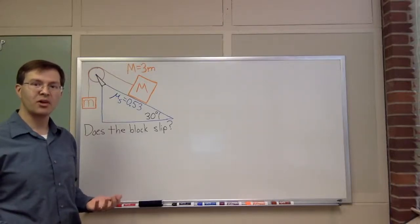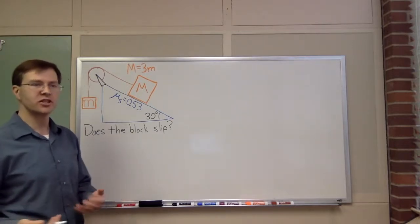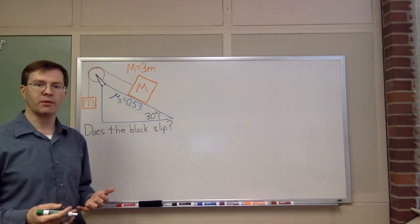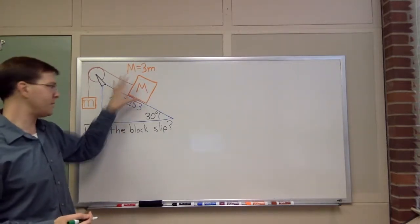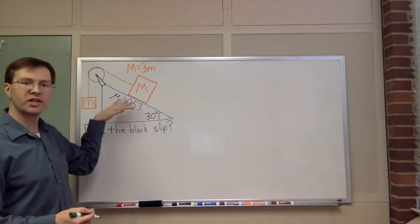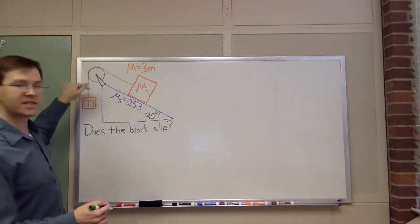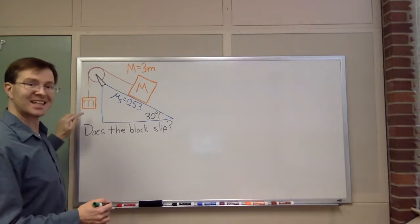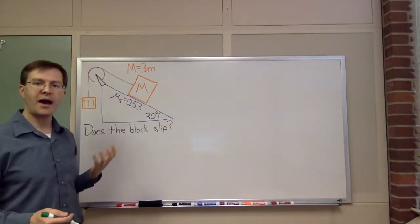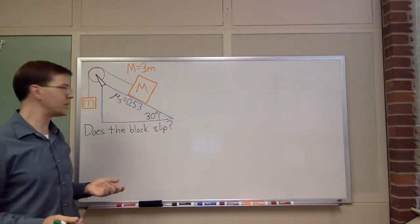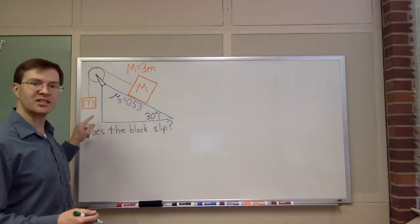I'd like to use physics to study an example of interacting objects that's going to involve a number of different topics like friction and tension, Newton's laws, all put together in one problem. In particular, in this problem, I have a block of mass big M that is sitting on a slope, a slope 30 degrees from horizontal, and it's connected by a massless rope over a massless frictionless pulley to a hanging mass, little m, that's hanging freely in space. The slope and the block on it have a coefficient of static friction of 0.53. The mass of the big block is three times the mass of the little block.